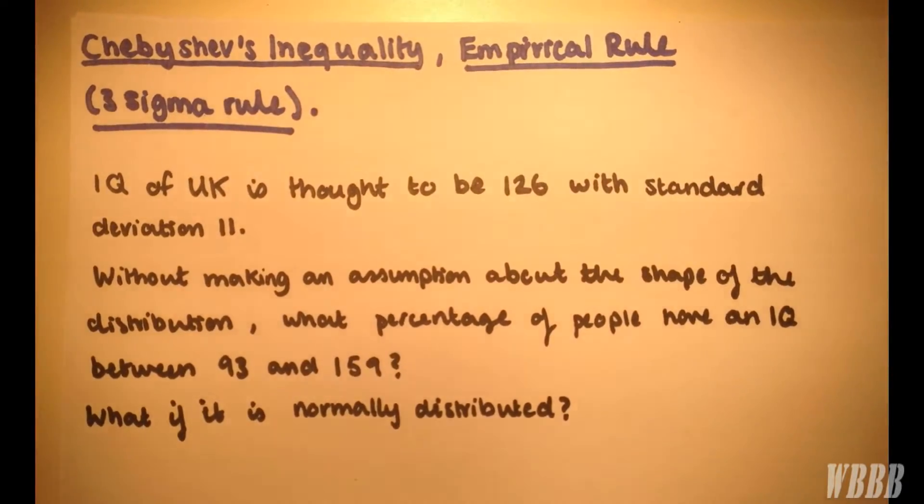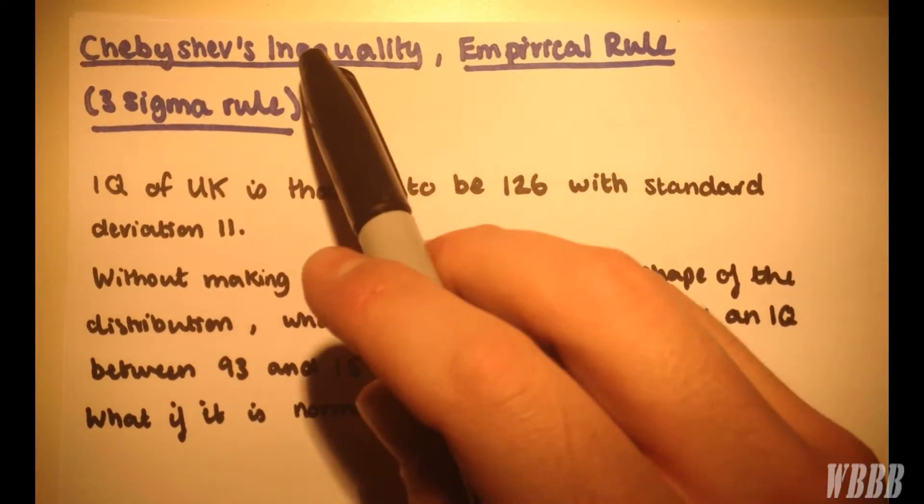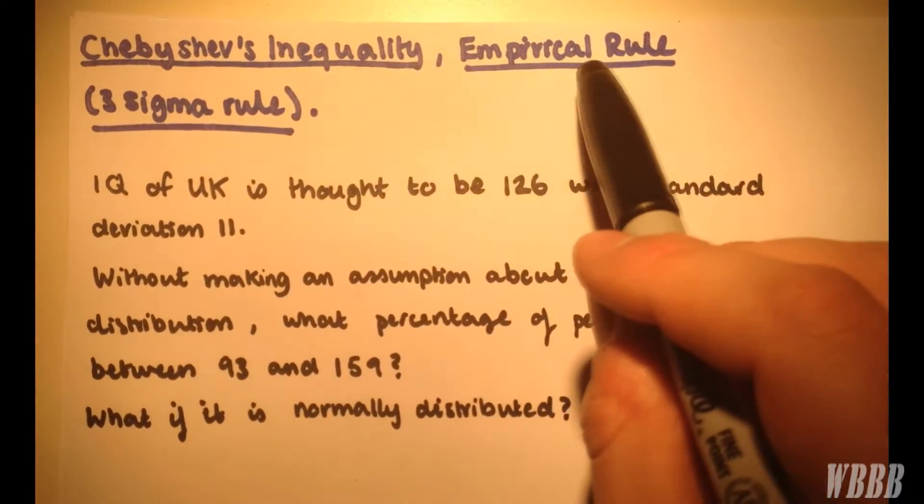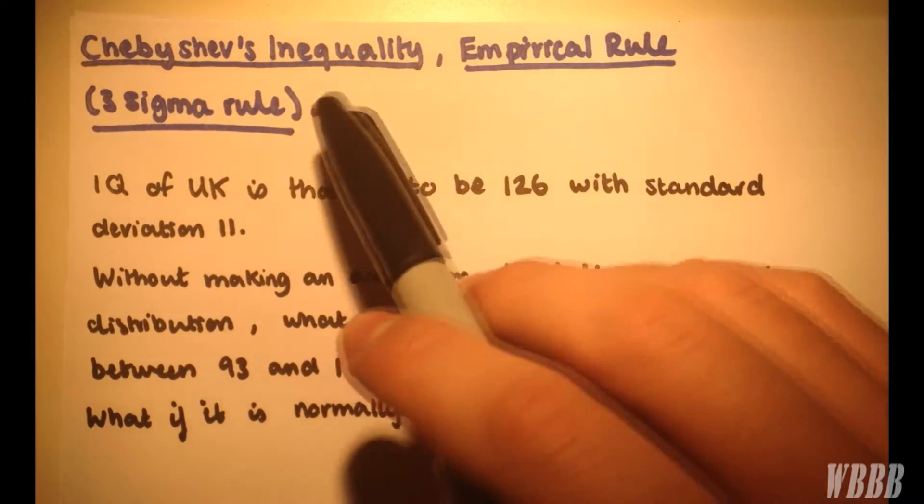OK, what this is, is an example question where we're going to use Chebyshev's inequality and demonstrate the empirical rule. Now, the empirical rule is also known as the three sigma rule, so don't get those two confused.